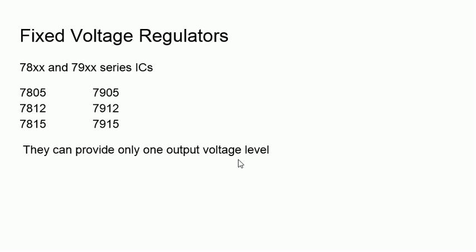For example, 7805 means plus 5 volt is the output of that IC, and the 7905 means minus 5 volt is the output of that IC. The last two digits will be the voltage levels - 05, 12 volt means 7812, like that. So in this video we are going to see what is adjustable voltage regulator ICs.